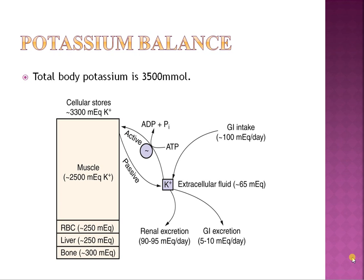So what mechanisms maintain tight potassium balance? As soon as potassium is consumed, it's absorbed from the intestinal tract into the blood and immediately taken into intracellular spaces. Most potassium is stored in muscle (~2500 mEq), with some in RBCs, liver, and bone cells. The main transporter is the Na+/K+-ATPase, which needs ATP. Then 90–95% of excess potassium is excreted through the kidneys, and 5–10% by the GI tract.